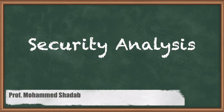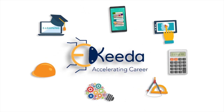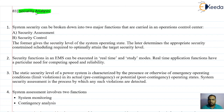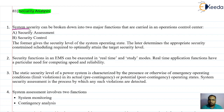In this video lecture we are going to discuss the security analysis process for the power system. We have understood from our previous lecture the basic idea of power system security. Now let us understand the process of security analysis and how the security of the power system can be analyzed. System security can be broken down into two major functions carried out in the operation control system.